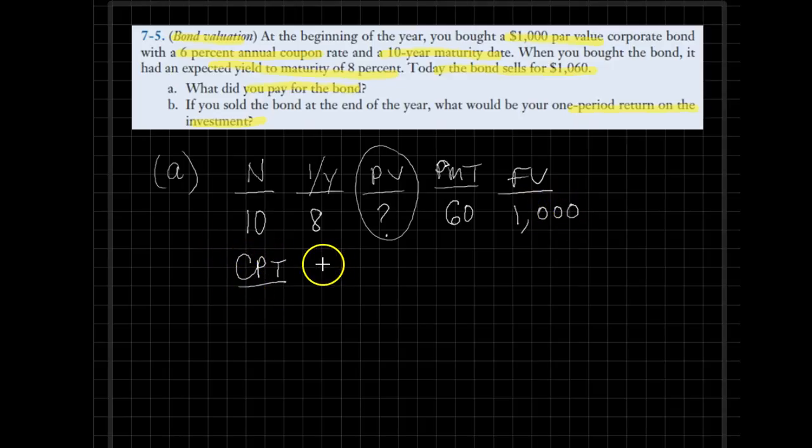So we simply compute the value in this case, that would automatically yield the purchase price of $865.80. So that would be the original purchase price.